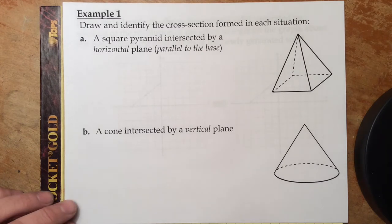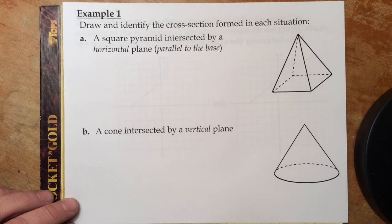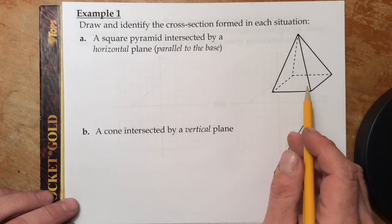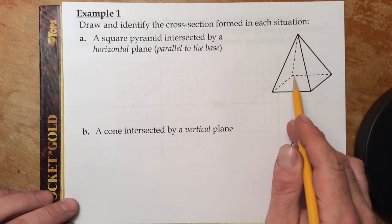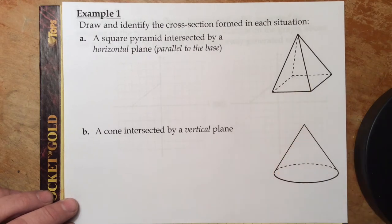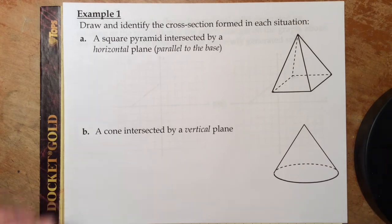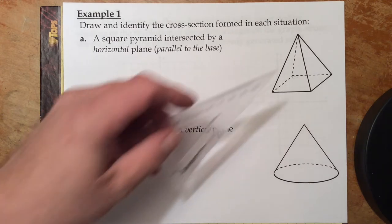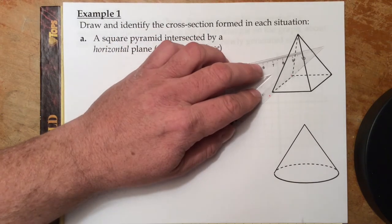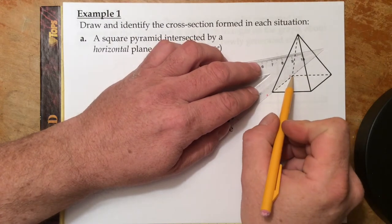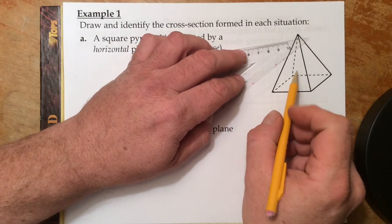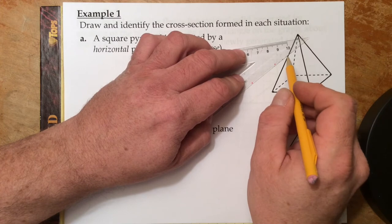Example 1. Draw and identify the cross section formed in each situation. Part A: a square pyramid intersected by a horizontal plane — a plane that's parallel to the base. Here's the base of the pyramid. We want a plane that intersects parallel to that base. We're going to take that base's sides and pull out a little bit with our straight edge and draw a plane.